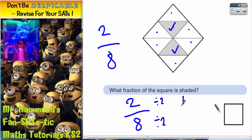2 divided by 2 is 1, 8 divided by 2 is 4. So an equivalent fraction to 2/8 is 1/4. The best answer is 1/4, or a quarter. A quarter of this square has been shaded.